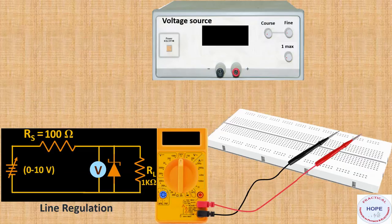Next we implement it experimentally. The first case is line regulation. We need a power supply, a series resistor, a combination of zener diode and load resistor, load resistance R_L of 1 kilo-ohm, and a multimeter to measure voltage accurately.